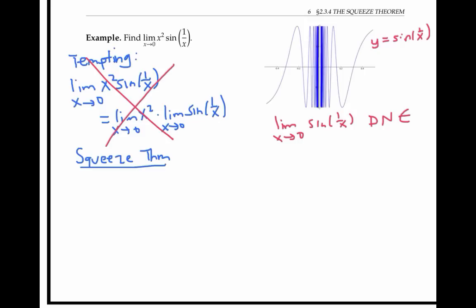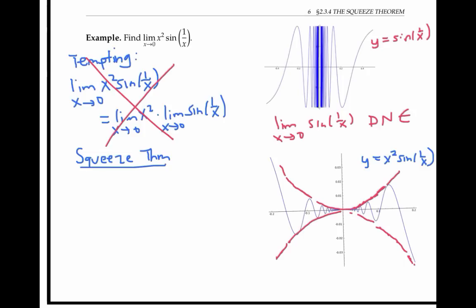Now this example is a little trickier than the first example, because in the first example, we were told what the upper and lower bounding functions should be. And in this example, we have to come up with them. But if we look at a graph of x squared sine one over x, we can see that it does seem to be trapped in an envelope here. Let's use algebra to see what those two bounding functions might be.